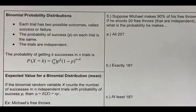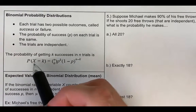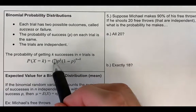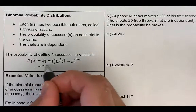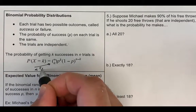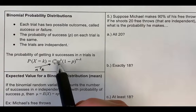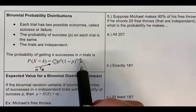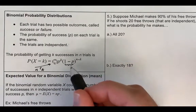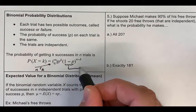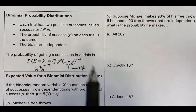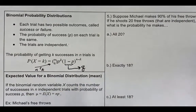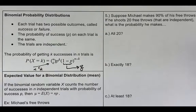The formula for the probability of K successes is equal to N choose K — remember, this is combination notation — times P to the K, that's the probability of success raised to the K power, times 1 minus P to the N minus K. This 1 minus P is the probability of failure, sometimes written as Q.